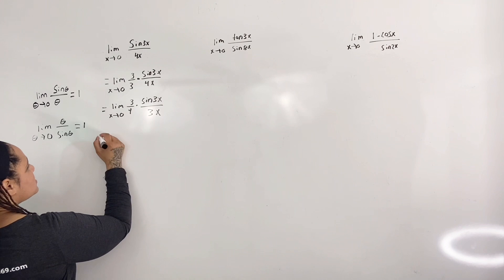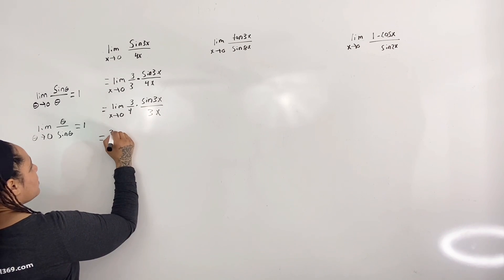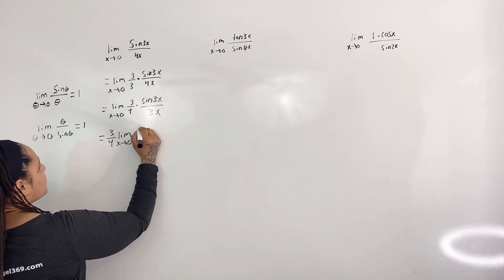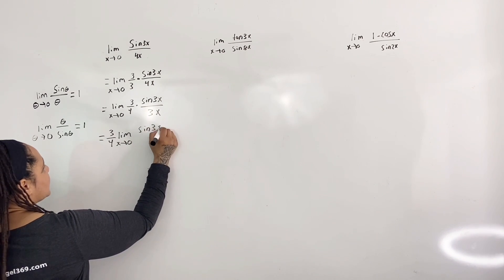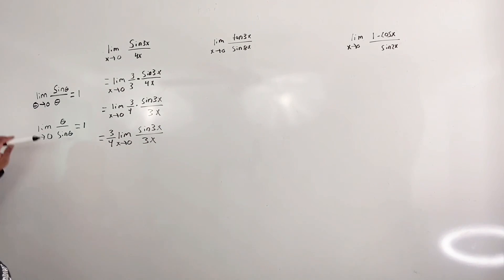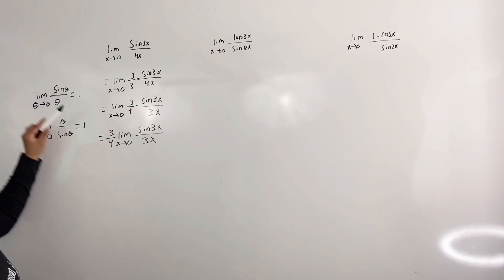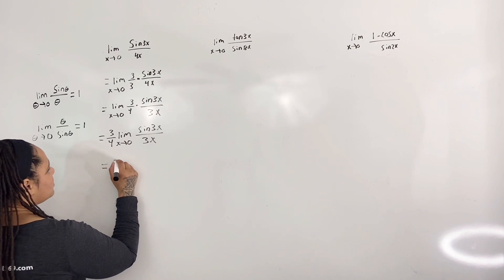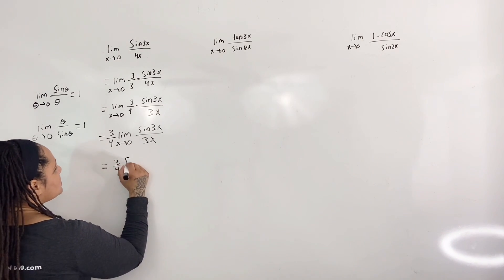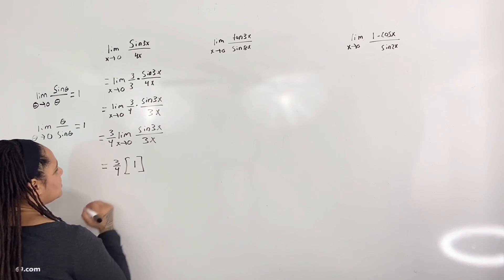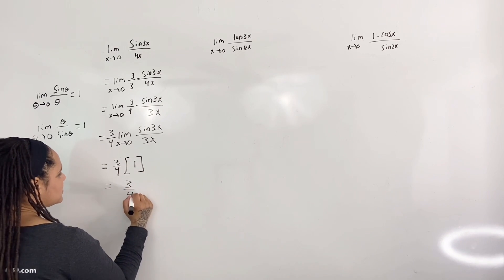So this will be 3 over 4 times sine of 3x over 3x. Now I'm just going to pull out 3 fourths, so this will equal 3 over 4 times the limit as x approaches 0 of sine of 3x over 3x. Now I can use the known limit — 3x in this case will be theta — so this is equal to 3 fourths times 1, which equals 3 fourths.